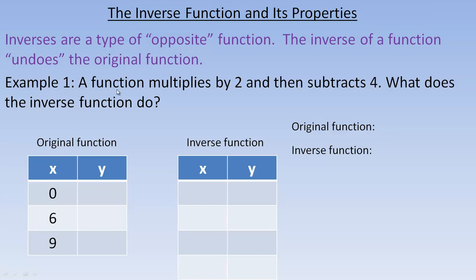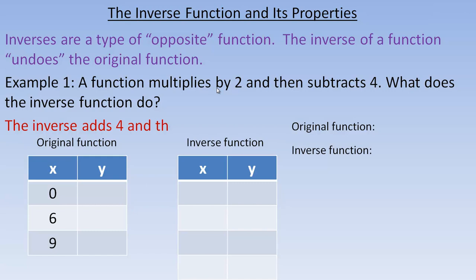In the first example, we have a function that multiplies by 2 and then subtracts 4. So what does the inverse function do? It has to do the opposite in the opposite order. The opposite of subtracting 4 would be to add 4, and then the opposite of multiplying by 2 would be to divide by 2. So the inverse adds 4 and then divides by 2.